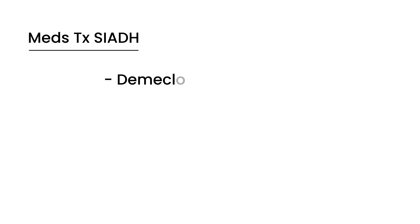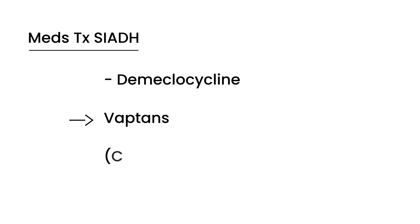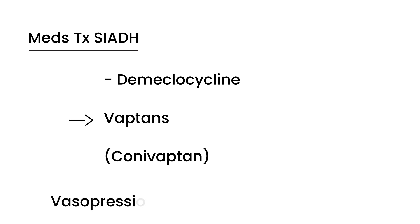The last thing I'd like to mention is medications that can be used to treat SIADH. There's an older one called demeclocycline, which was commonly tested in licensing exams of the past. It diminishes the response of the collecting tubule to ADH — it makes it so that ADH doesn't work as well on the collecting tubule. A more recent class of medications are called Vaptans. These medications are essentially ADH antagonists, or vasopressin antagonists — vasopressin being just another name for ADH. When you have a lot of ADH, you give something that counters it.